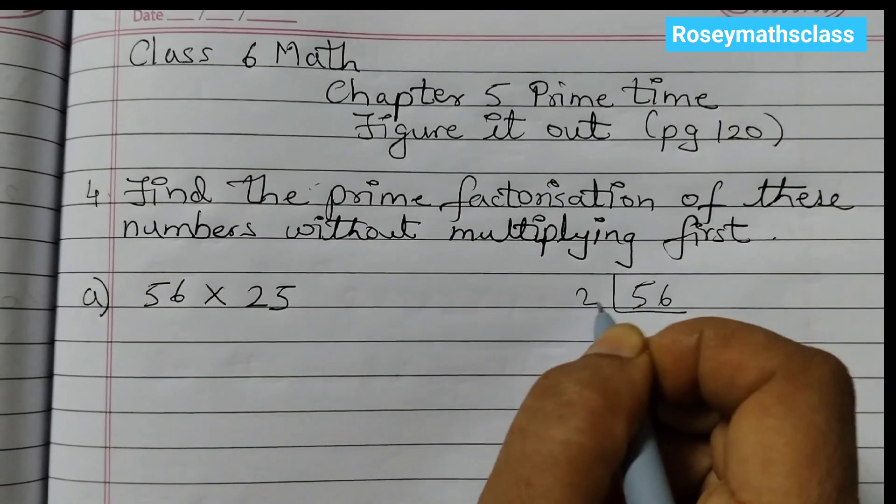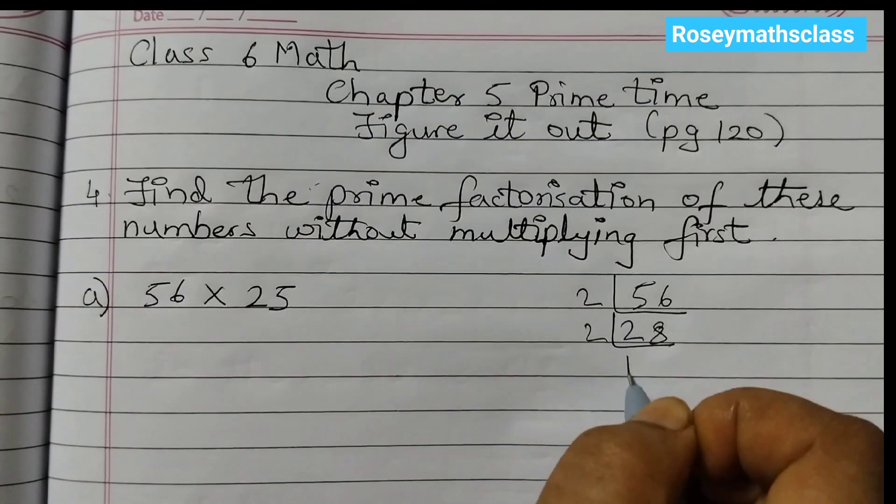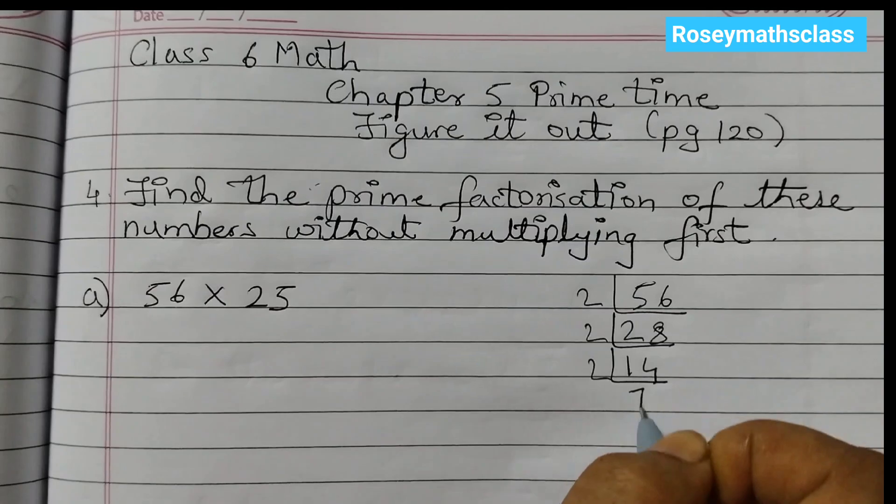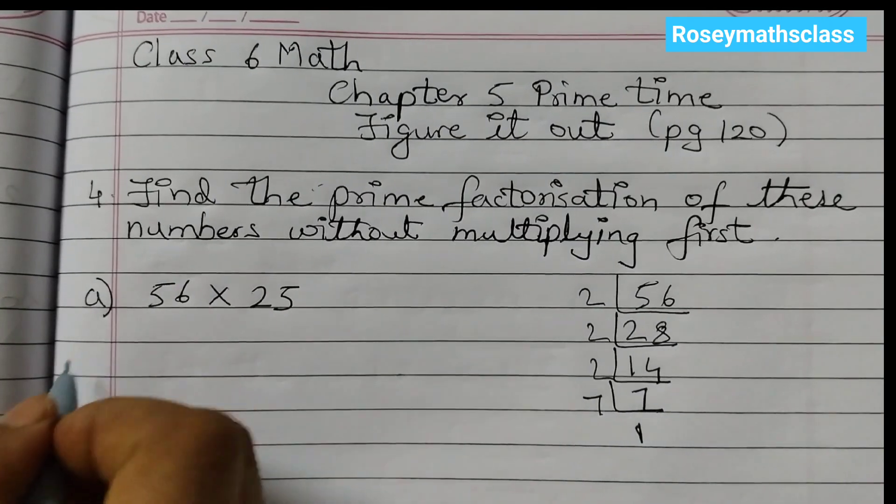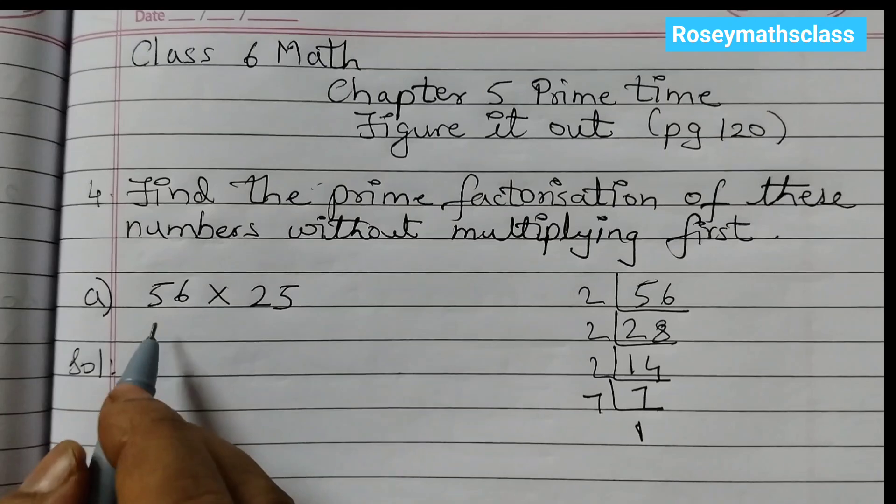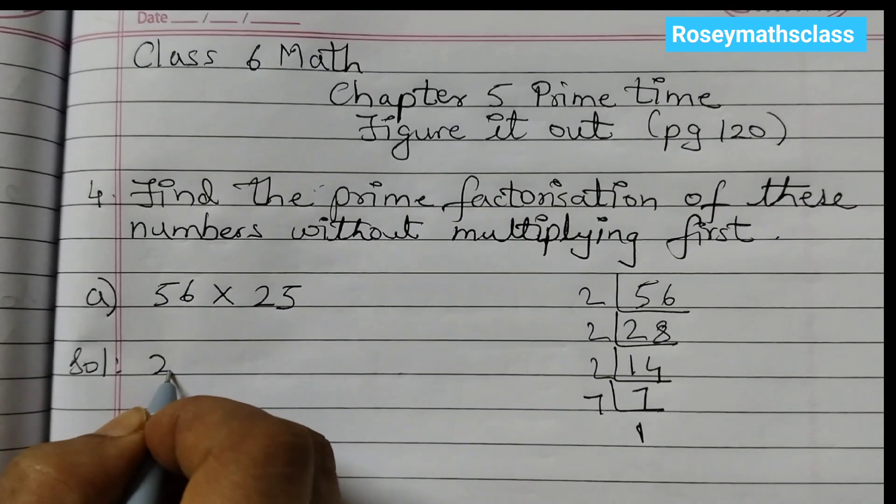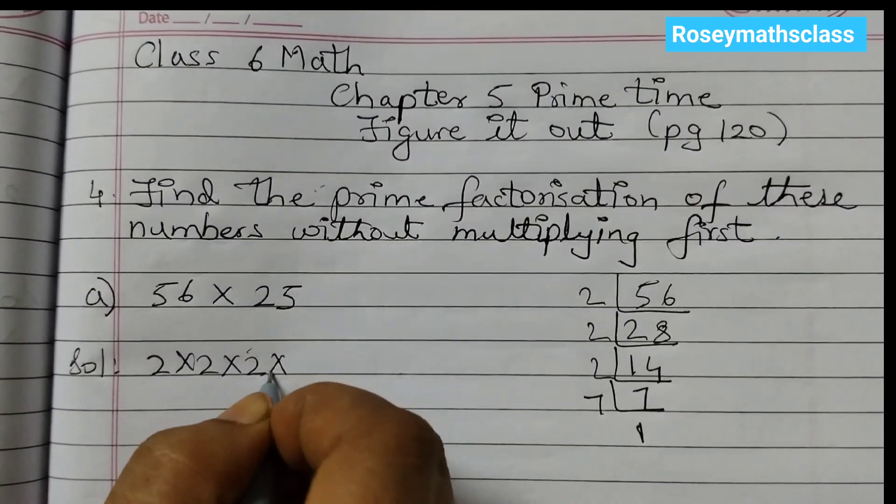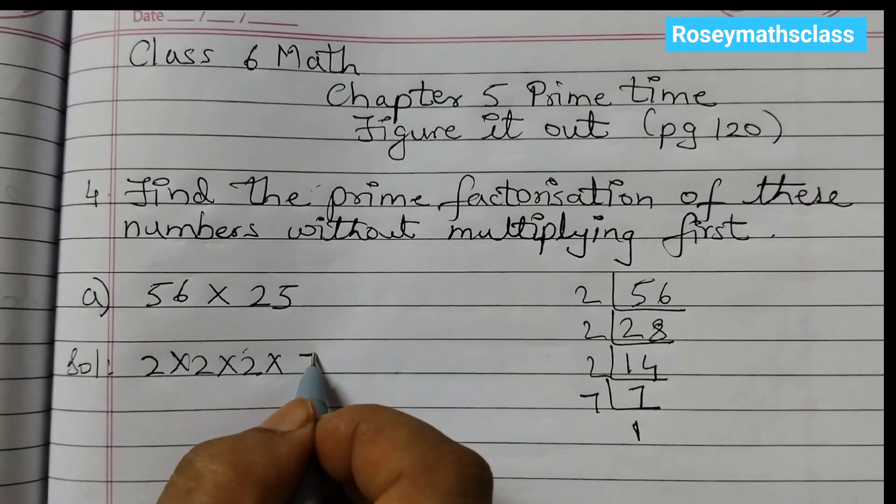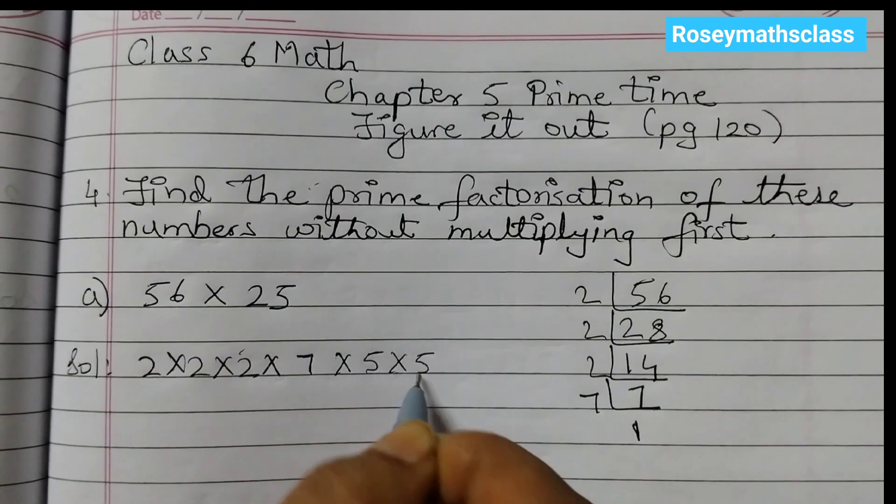So 56 we can start by 2. 2×2 are 4, 16, 2×8 are 16, then 2×1 are 2, 2×4 are 8, 2×7 are 14, and 7×1 are 7. So for this one, 56 can be written as 2 into 2 into 2 into 7. And here we have 25, so 25 we can write as 5 into 5.